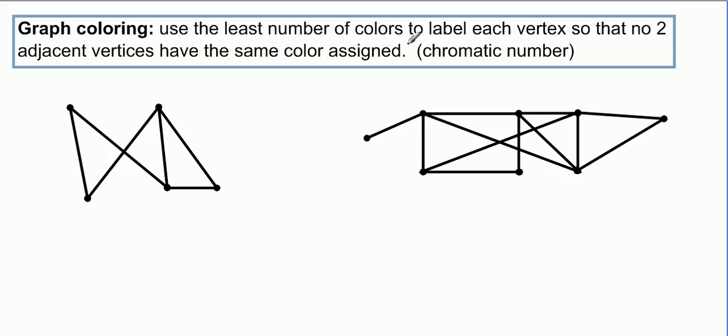We're going to try to use the least number of colors we can to label each vertex so no two adjacent vertices have the same color assigned. Now for small problems like these, we can just sort of do it by trial and error.